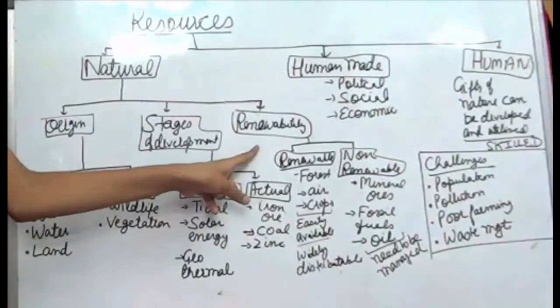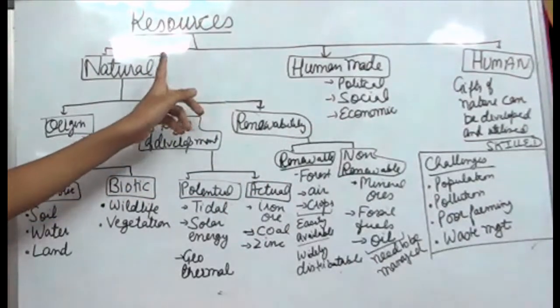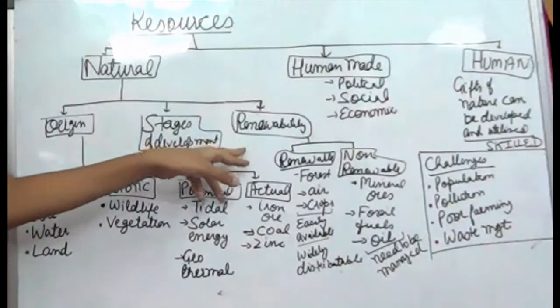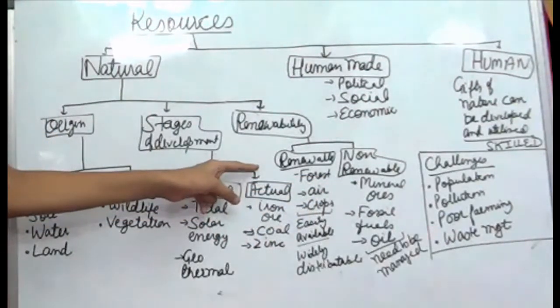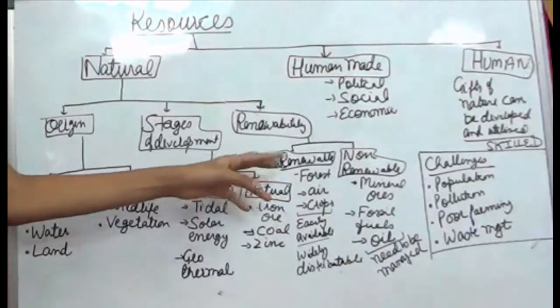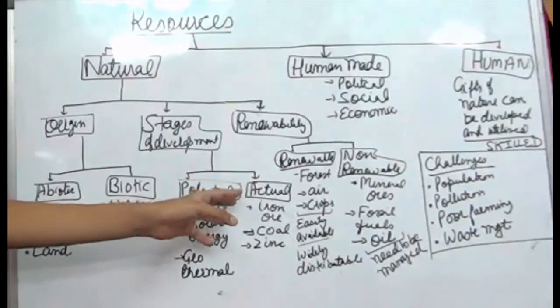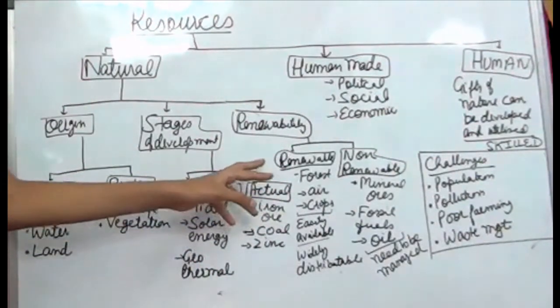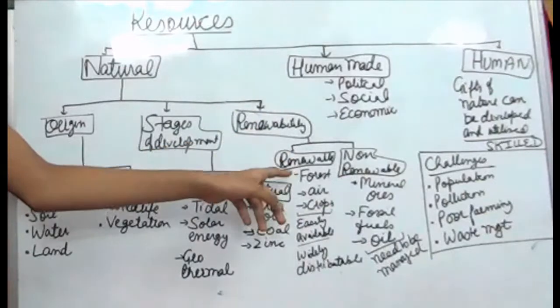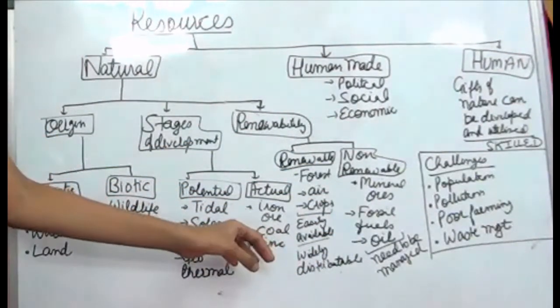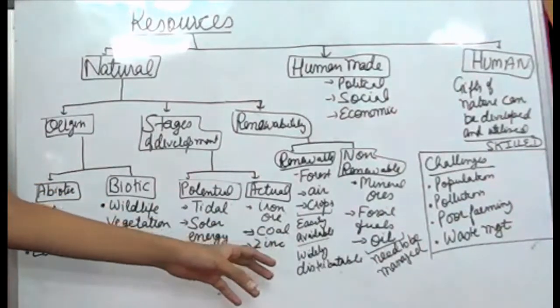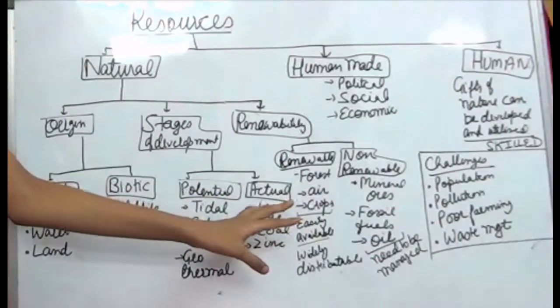Next is renewability. Natural resources can be either renewable or non-renewable. Renewable resources are resources which can be renewed over and over and will last forever for human beings, such as forest, air, and crops. They can be easily renewed over a short period of time and can never be ended.